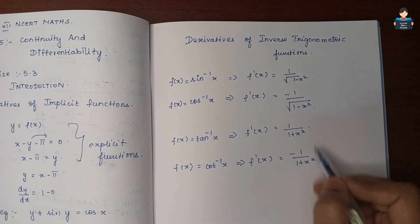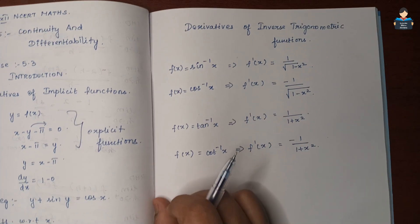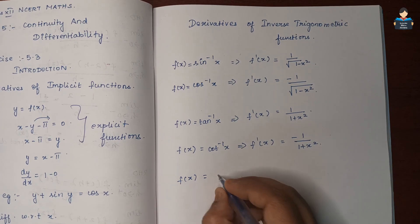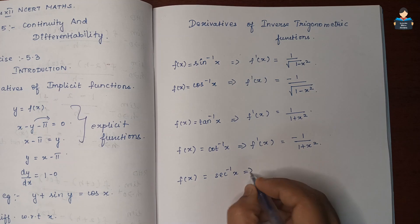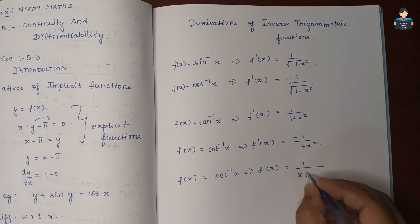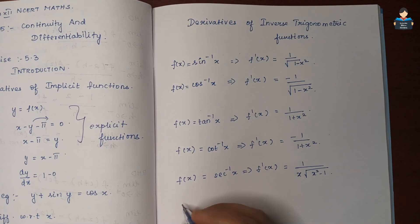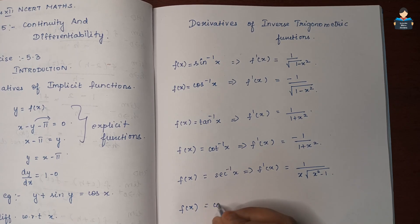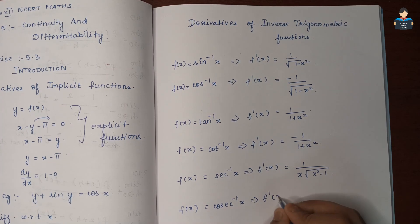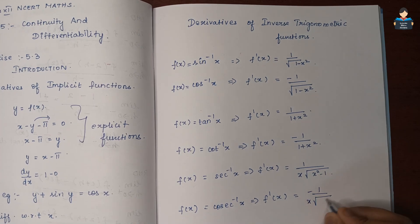So that is sec inverse and cosec inverse. f(x) = sec⁻¹x, so f'(x) = 1 / (x · √(x² - 1)). And for cosec inverse, f(x) = cosec⁻¹x, then f'(x) = -1 / (x · √(x² - 1)). The same formula but with a minus sign.